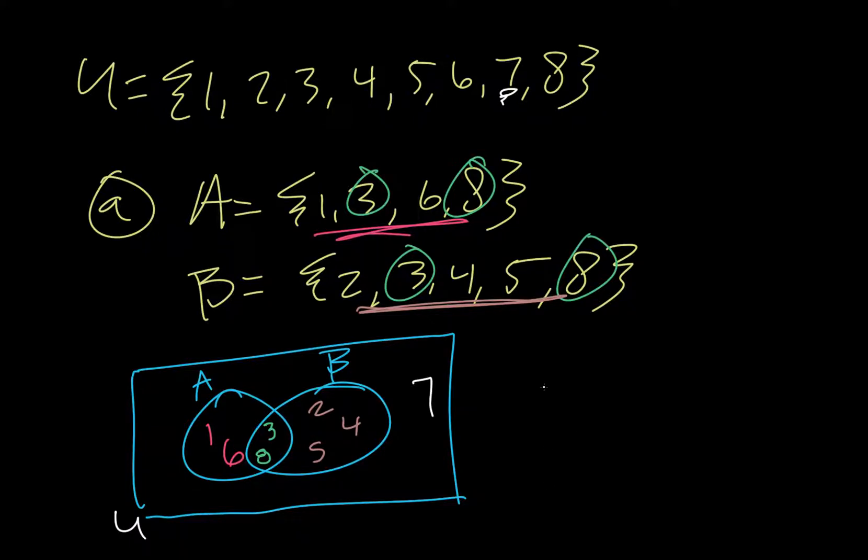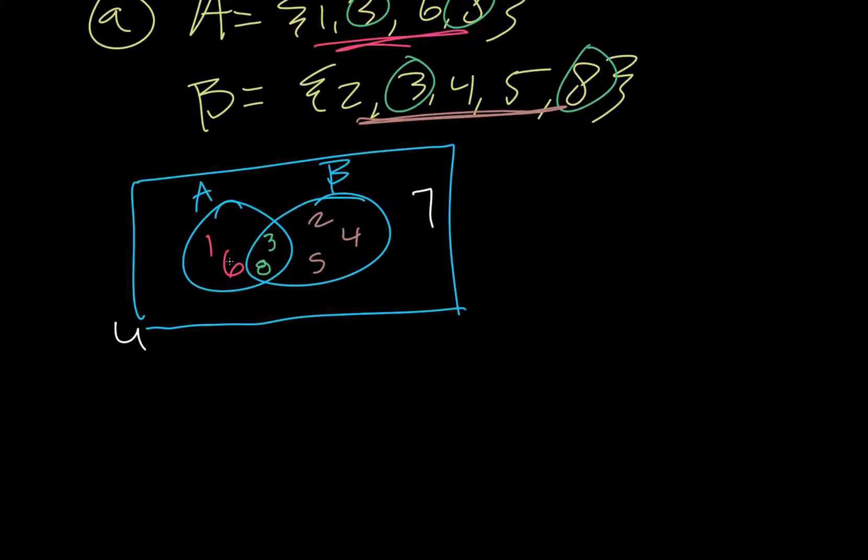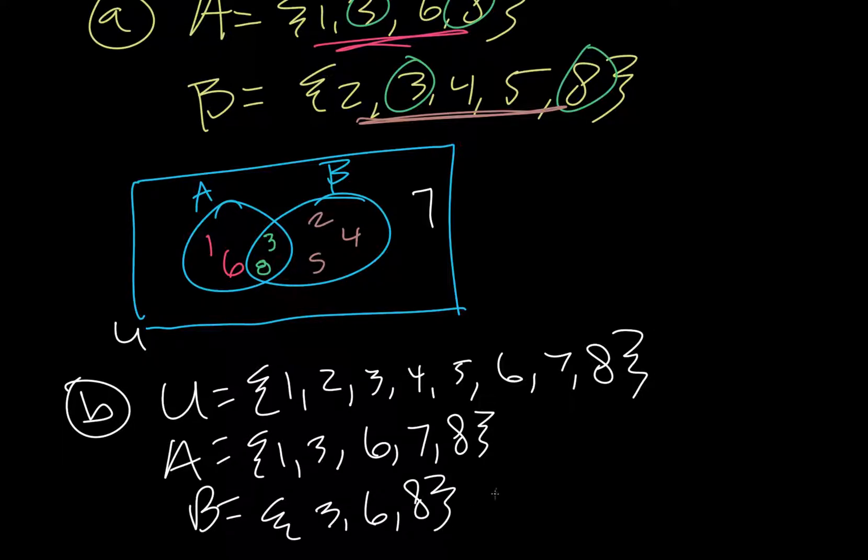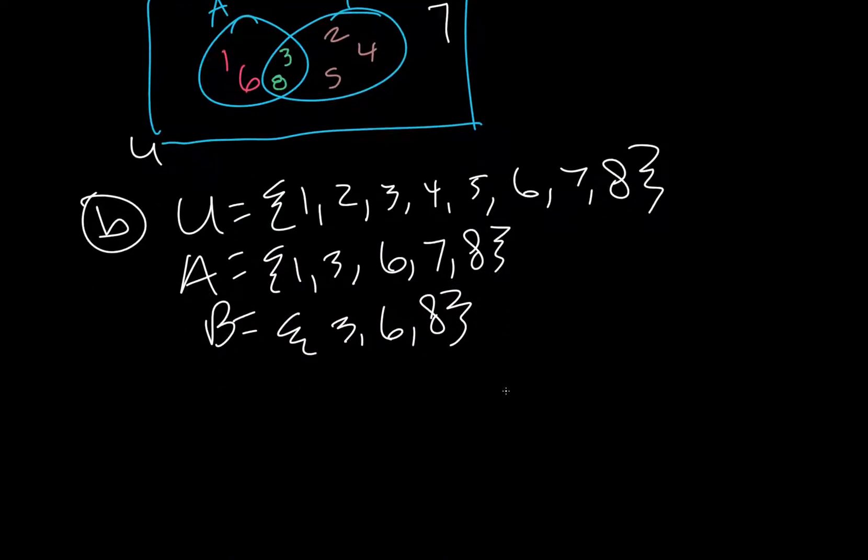Now, we're gonna try part B. So, I'm gonna write my U out again. One, two, three, four, five, six, seven, eight. And the new ones that we need to look at are A and B. So, it's one, three, six, seven, eight. And three, six, eight.